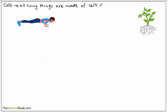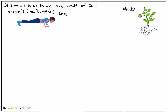When we talk about all living things we can divide them into two groups. The first group would be animals — and remember humans are classed as animals as well. On the other side we have our plants. It's worth remembering though that not all parts of living things are made of cells.